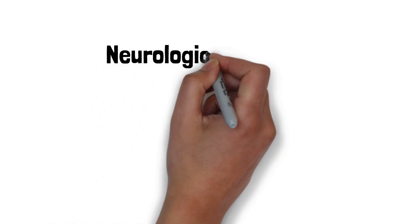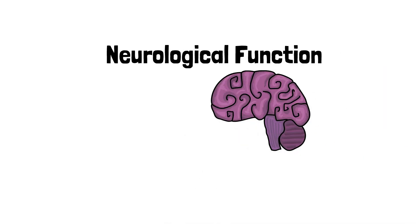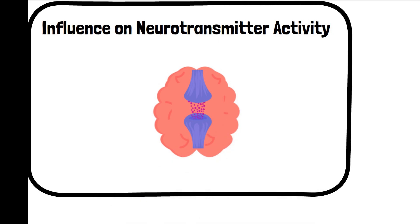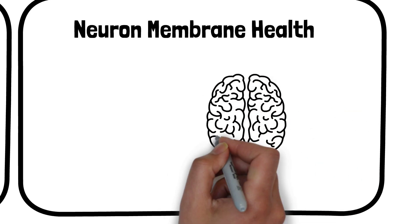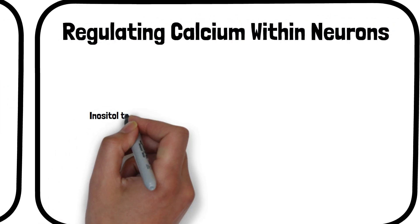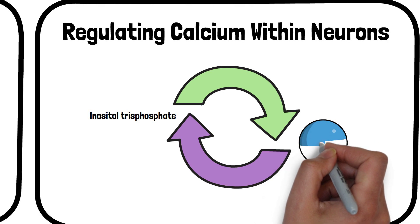Inositol may play a role in nerve functions and has been studied for its potential in treating conditions like diabetic neuropathy. It plays a crucial role in the functioning of neurotransmitters — chemical messengers in the brain and nervous system — particularly influencing serotonin and dopamine, which are essential for mood regulation and cognitive functions. As part of the phospholipids that make up neuron membranes, inositol is vital for maintaining their integrity and fluidity, which is crucial for the proper transmission of nerve impulses. Inositol triphosphate, a derivative of inositol, also plays a role in regulating calcium within neurons, an important factor in nerve signal transmission.